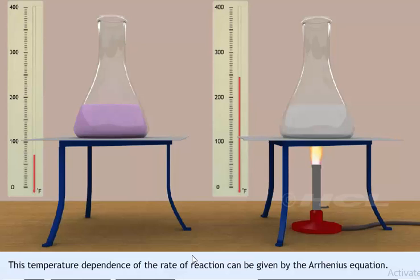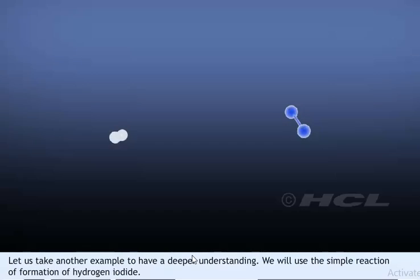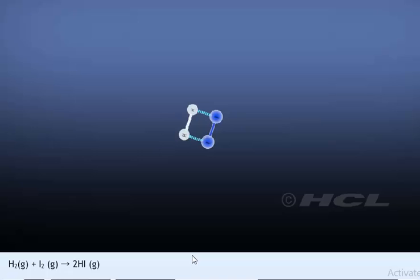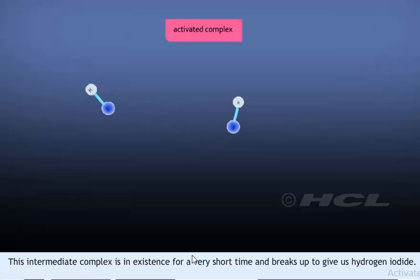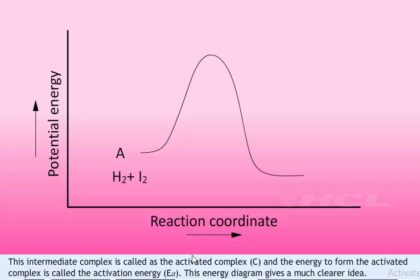In the Arrhenius equation, A is the Arrhenius factor or the frequency factor, Ea is the activation energy, and R is the gas constant. Consider the simple reaction of formation of hydrogen iodide: hydrogen and iodine gases combine to form hydrogen iodide. Arrhenius theorized that these molecules collide to form an intermediate complex first. This intermediate complex exists for a very short time, then breaks up to give hydrogen iodide. The intermediate complex is called the activated complex C, and the energy required to form it is called the activation energy Ea.